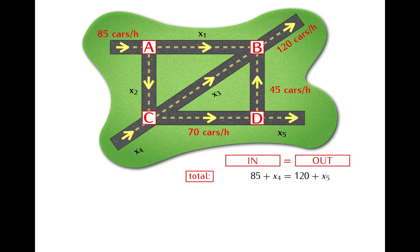And so, at intersection A we have only one street that brings cars in and this street carries 85 cars per hour and this must be equal to the flow out of this intersection. We have two streets going out with flows x1 and x2 and so the total flow out of this intersection is x1 plus x2.